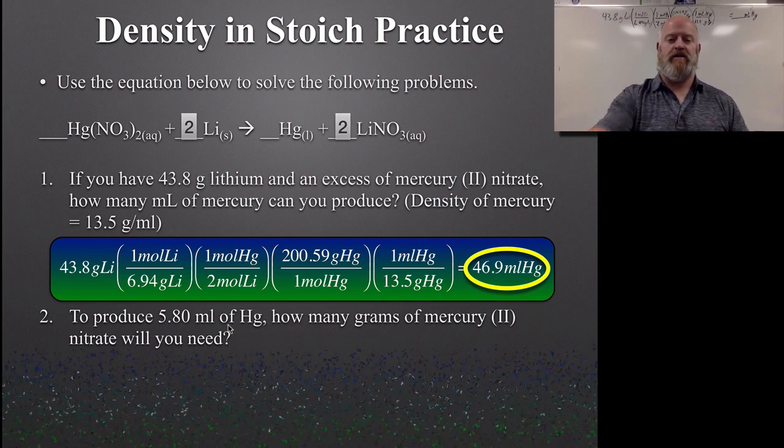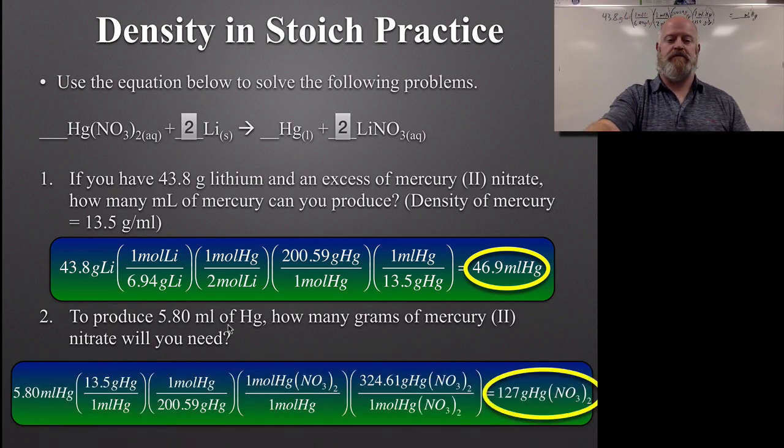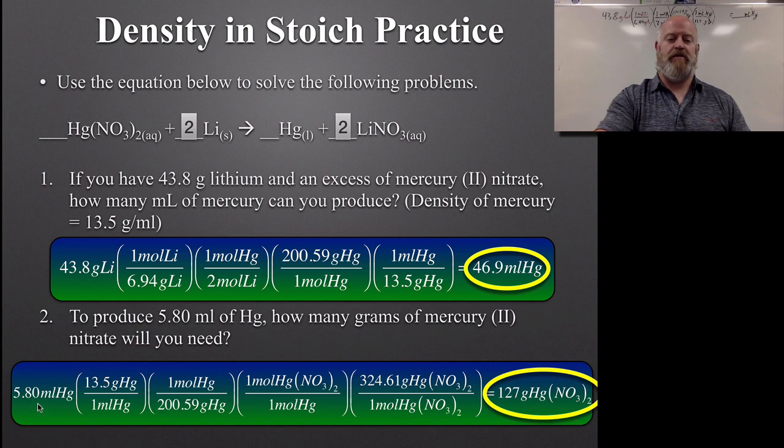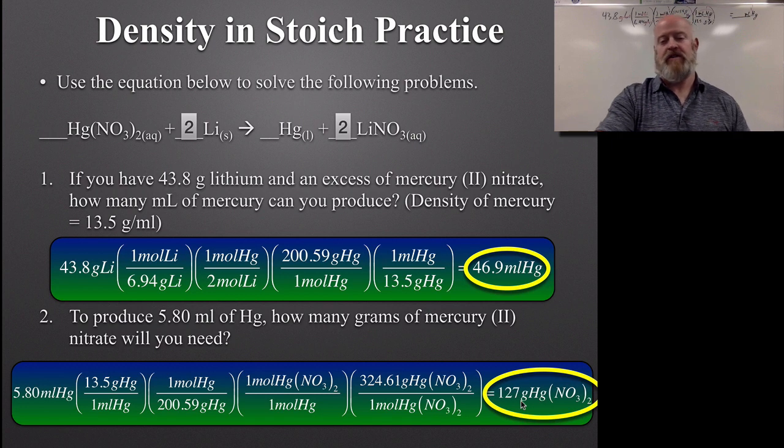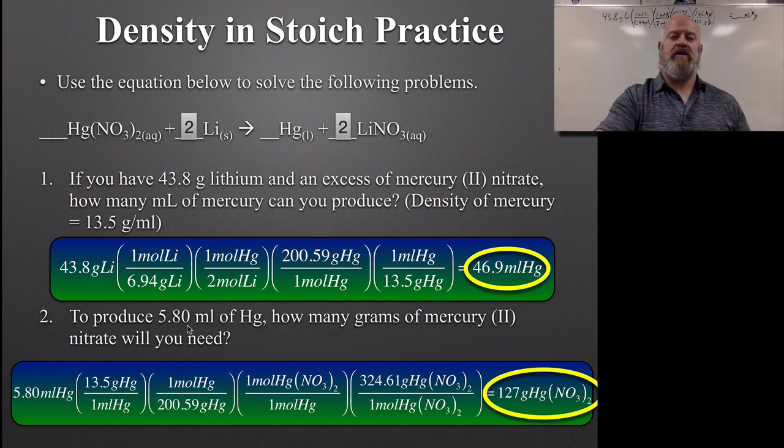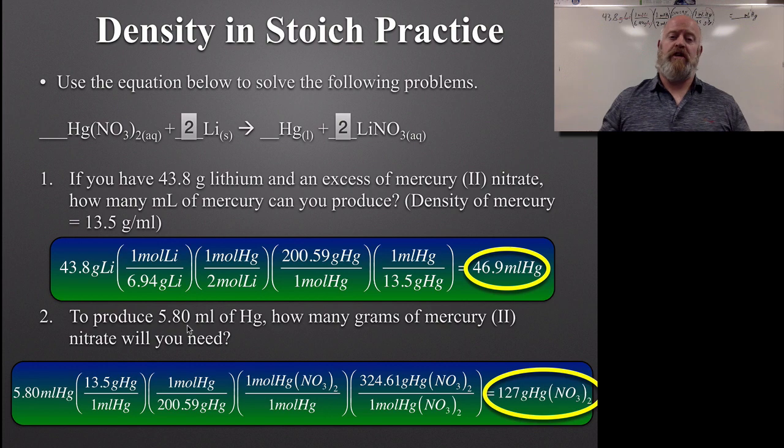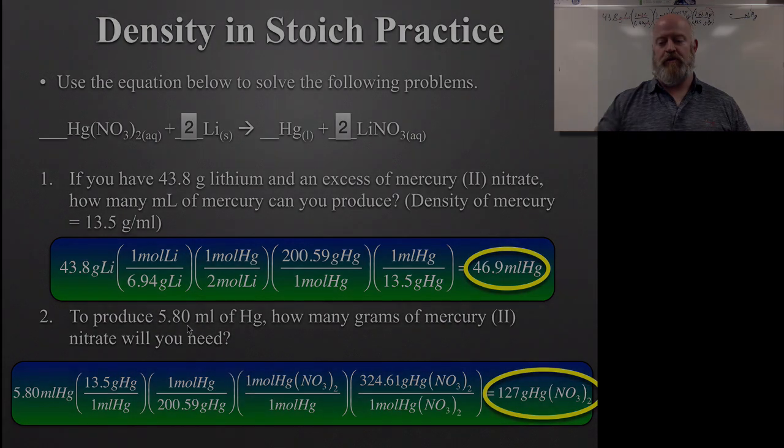So once again, some of you paused it, some of you didn't. Either way, here's your answer. If we started with 5.8 milliliters of mercury, we use the density first, milliliters to grams, and then we can go back to our normal three-step stoichiometry problem, where we go from grams to moles, moles to moles. Now we have mercury nitrate. Moles of mercury nitrate to molar mass of mercury nitrate, 324.61, and we get 127 grams of mercury nitrate, again, down to three significant figures, because we have the 5, the 8, and that extra zero is significant here, or is part of the measurement here, because it's added on. So that's using density. Just one more step from what we were doing before.